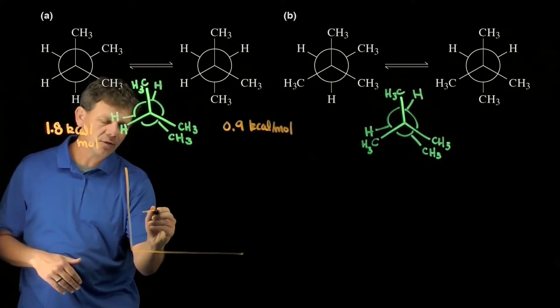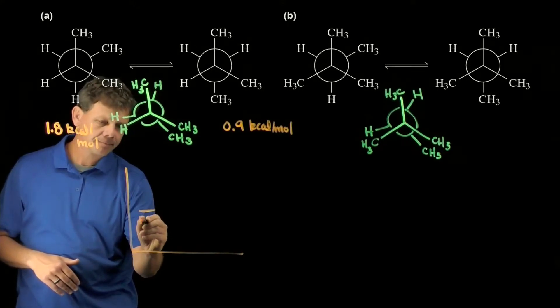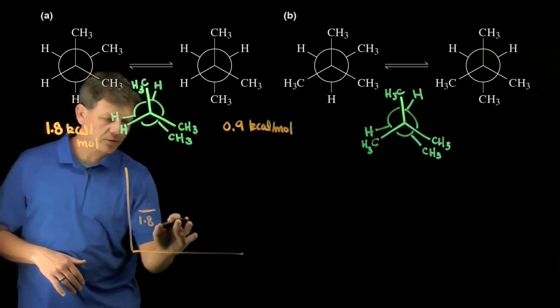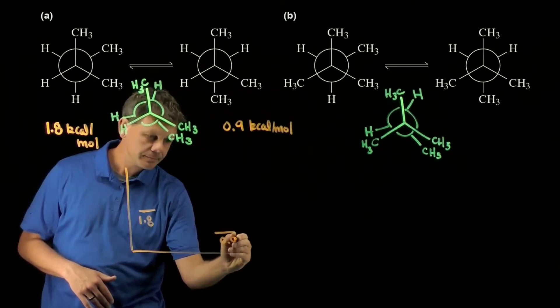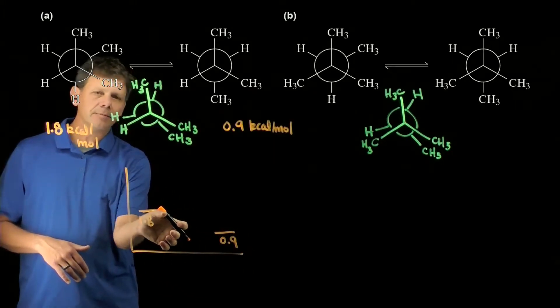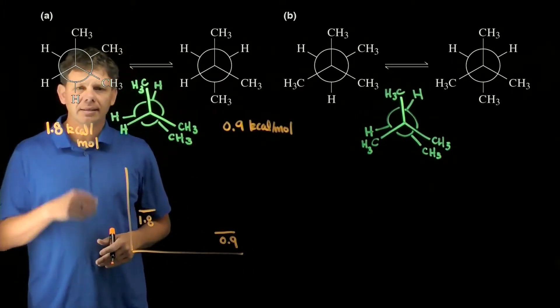Let's go ahead and label that here. We'll pretend that here's our value of 1.8—that's our starting value—and we'll finish at a value of 0.9, so that the difference here is 0.9 kilocalories per mole.